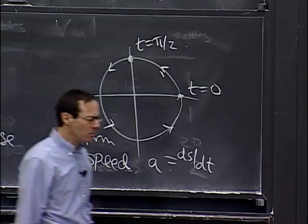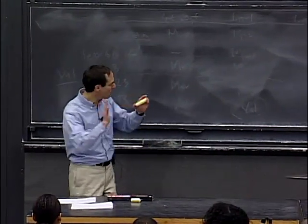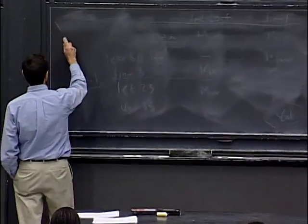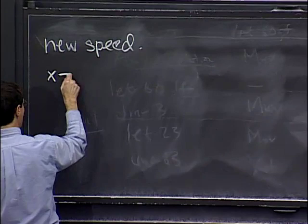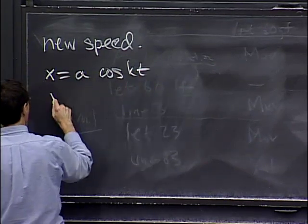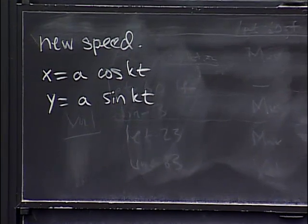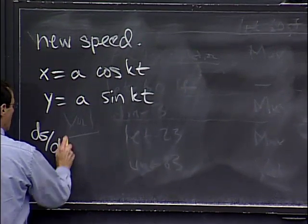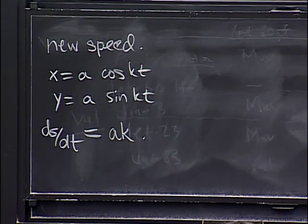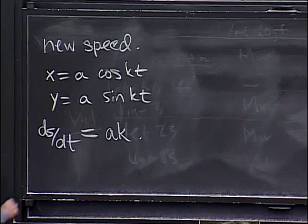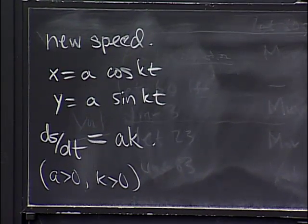That means we can play around with the speed. If you want to change the speed, a new parametrization going around the same circle would give a speed of a times k — that's what works out to be the speed, provided k is positive and a is positive. We're making the convention that these constants are positive.